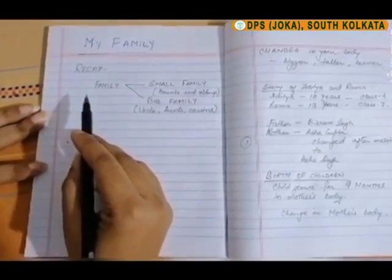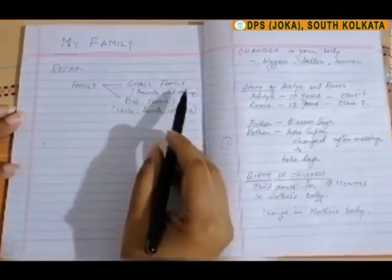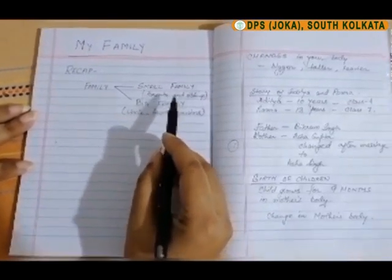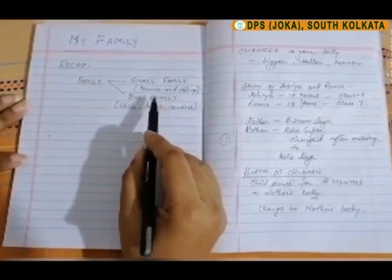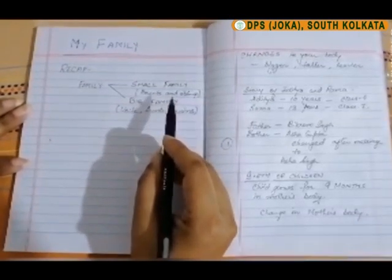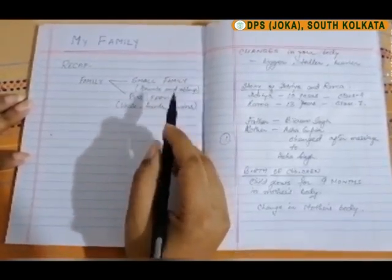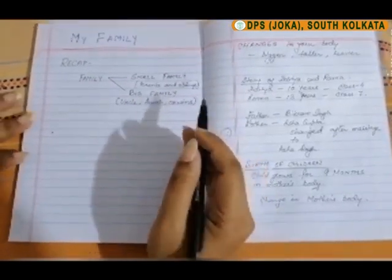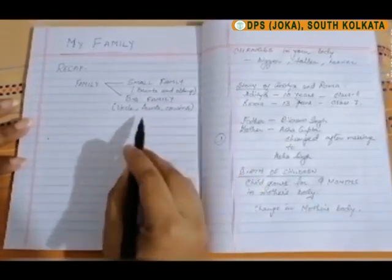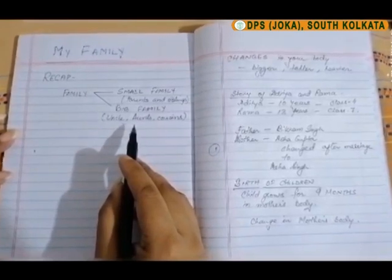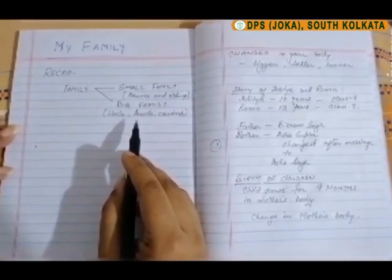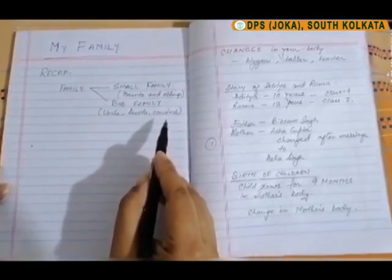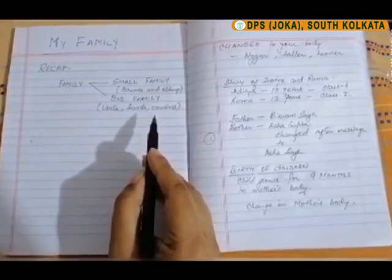We studied about different types of families — small family and big family. A small family consists of parents and siblings, that is brothers and sisters, and may have only 4 or 5 members. A big family includes your parents, grandparents, brothers, sisters, uncles, aunts, and your cousins.